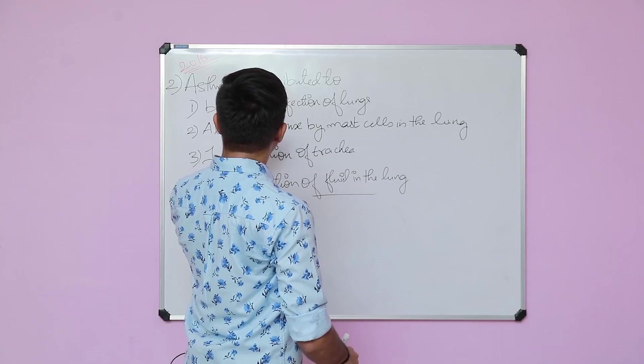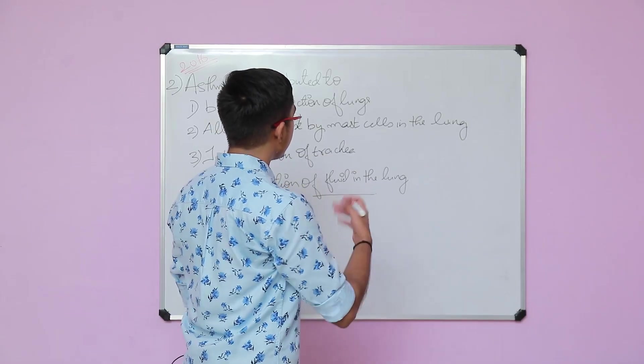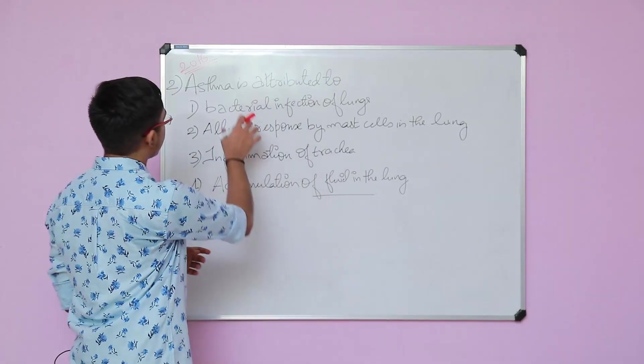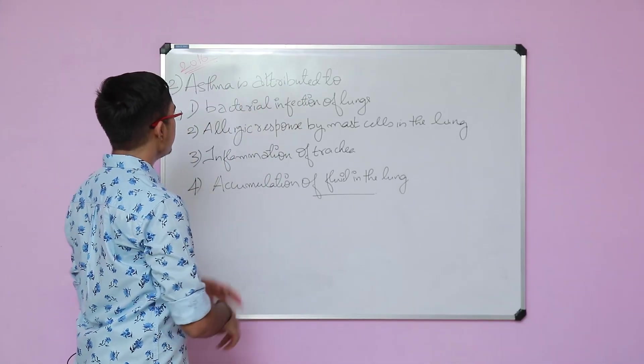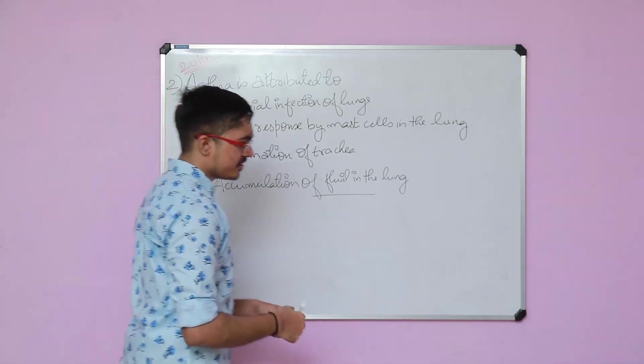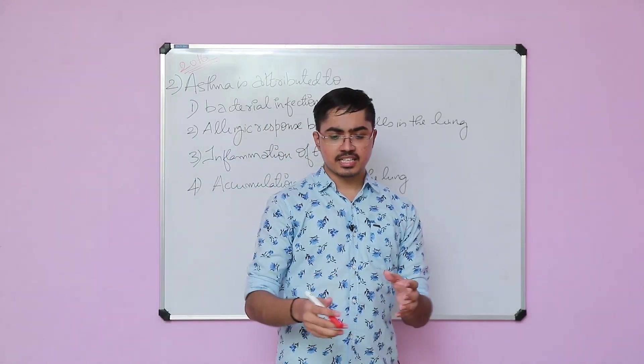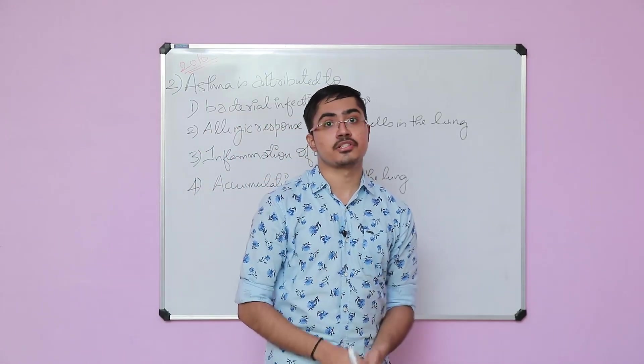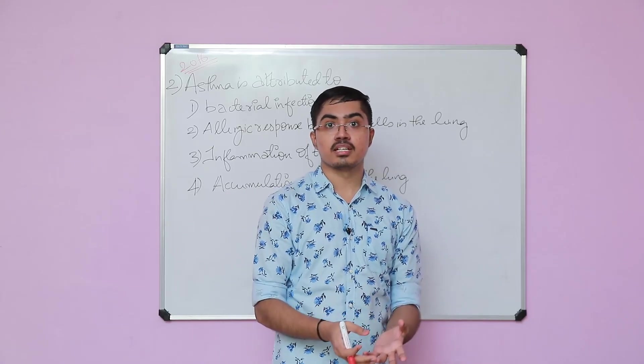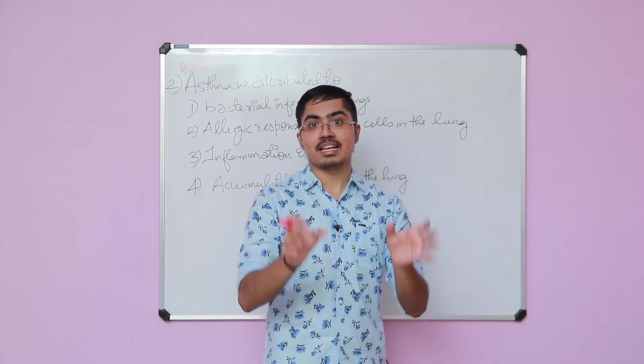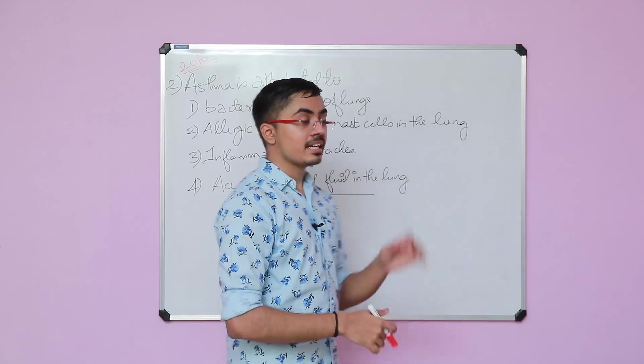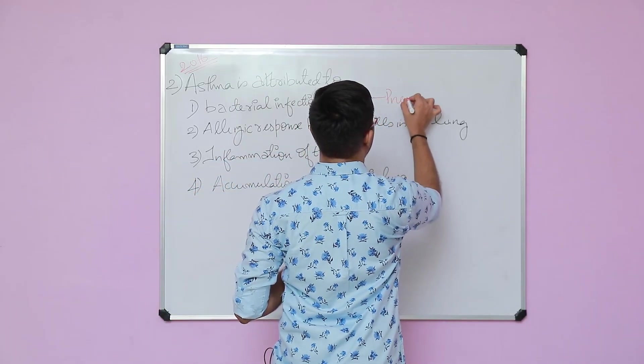Asthma has been covered in the previous question. Now in this question they are asking something else. Asthma is attributed to four options. Bacterial infection of lungs - like streptococcus pneumoniae infection of the lung or Haemophilus influenzae infection of the lung. These two organisms have been taught as causing pneumonia in the lungs. This causes pneumonia, not asthma.